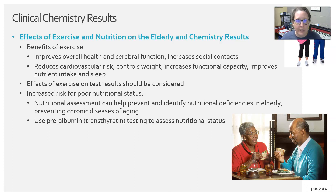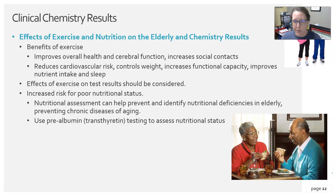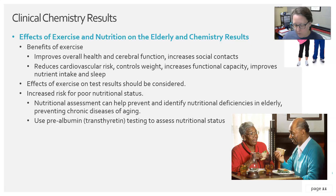The effects of exercise and nutrition on the elderly and chemistry results: the benefits of exercise — as part of programs like Silver Sneakers — include improved overall health and cerebral function, increased social contact which can reduce depression, reduced cardiovascular risk, weight control, increased functional capacity, and improved nutrient intake and sleep. The effects of exercise on test results should be considered. Elderly patients are also at increased risk for poor nutritional status. Nutritional assessment using the prealbumin — also known as transthyretin — test, which changes first to reflect nutritional status, can help prevent and identify nutritional deficiencies and chronic diseases of aging.